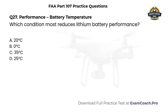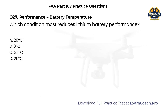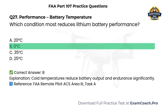Performance. Battery temperature. Refer to the battery temperature chart. Which condition most reduces lithium battery performance? A. 20 degrees Celsius. B. 0 degrees Celsius. C. 35 degrees Celsius. D. 25 degrees Celsius. Correct answer: B. Cold temperatures reduce battery output and endurance significantly.